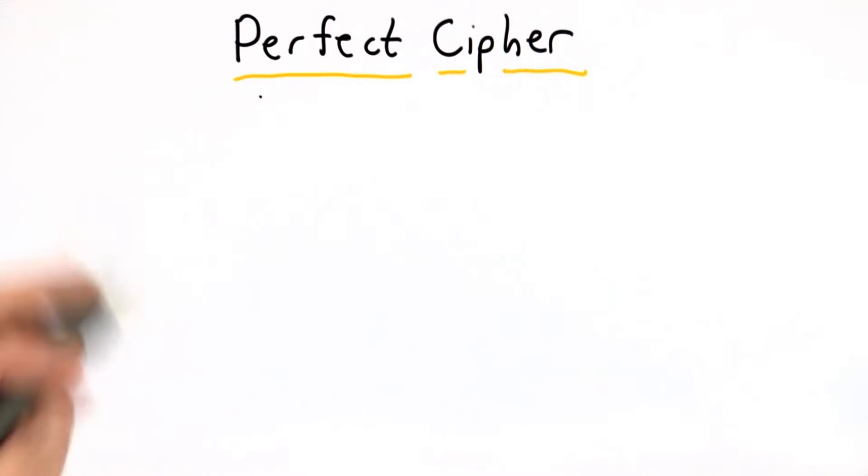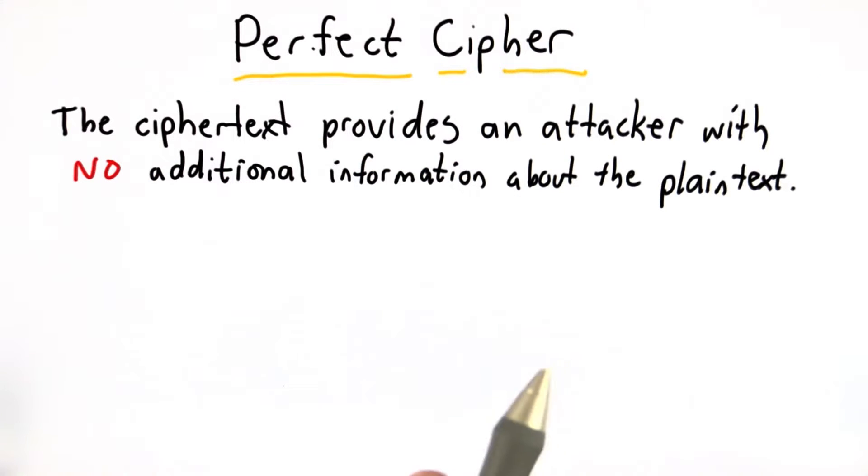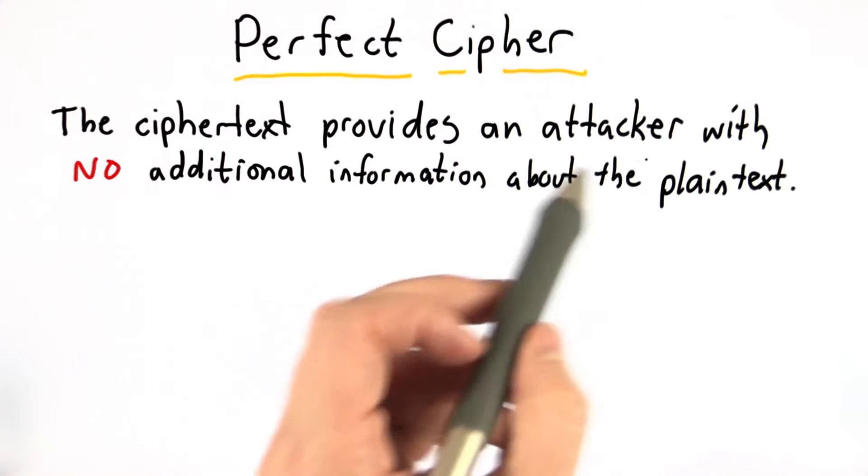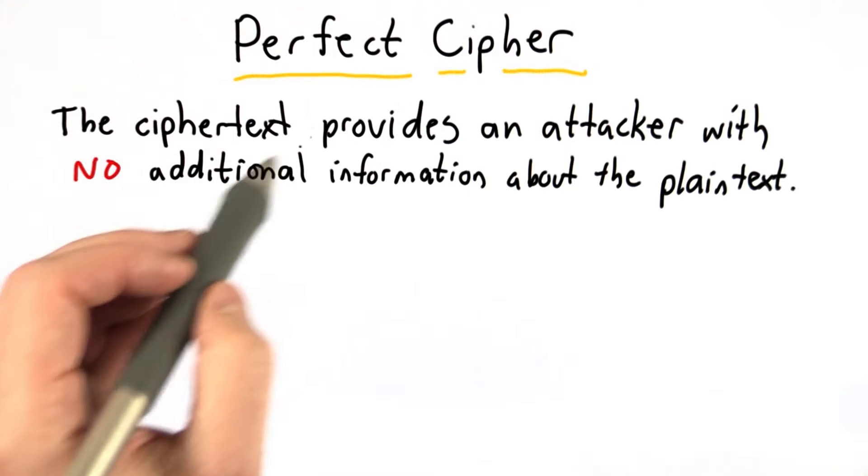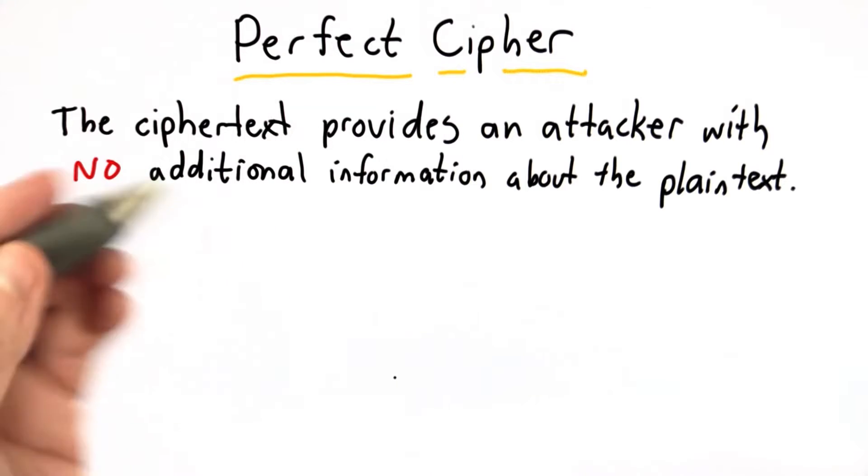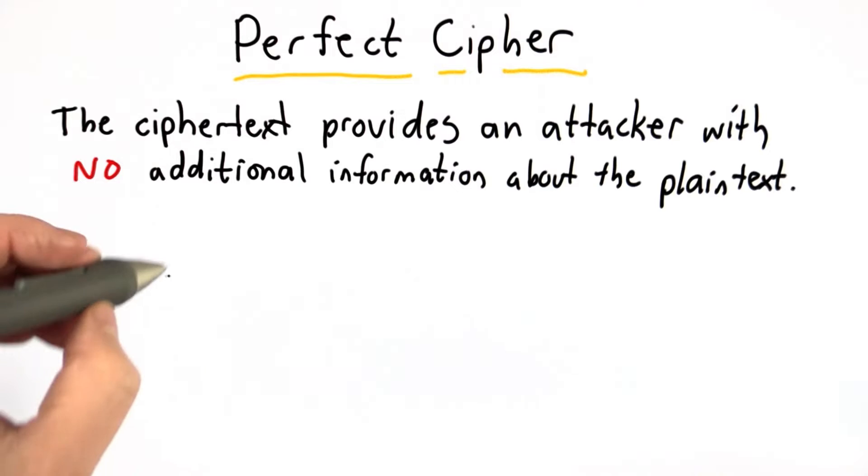Now we're ready to define what a perfect cipher is and to see why the one-time pad satisfies this property. The notion that we want a perfect cipher to mean is that if an attacker intercepts a message and receives the ciphertext, that provides them with no additional information at all about what the plaintext was.